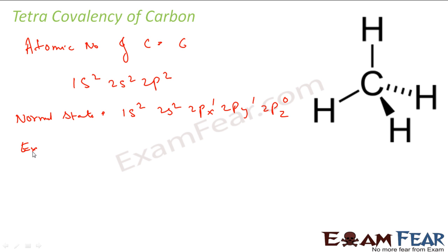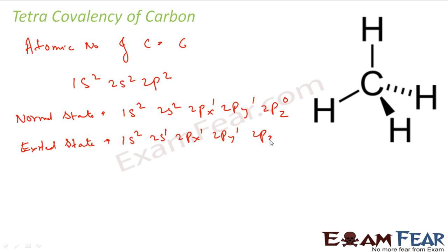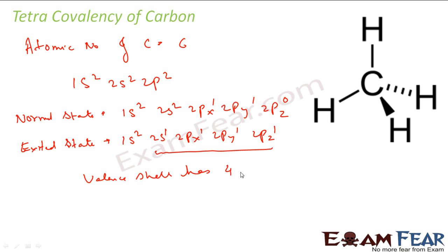In the excited state, one electron from 2s will go to the p-orbital, so it becomes 1s2, 2s1, 2px1, 2py1, and 2pz1. So if you see the valence shell has 4 electrons — all unpaired.